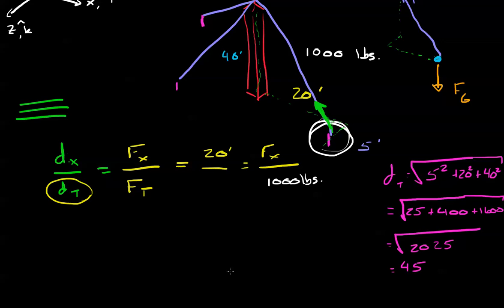Here you go. We find that the distance, total distance, right here, is 45 feet. So, let's put this down here, 45 feet. Now we know that the force in the x-direction is simply 20 feet times 1,000 pounds, divided by 45. Plug that into your calculator and get 444 pounds.